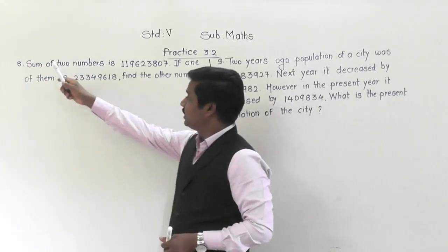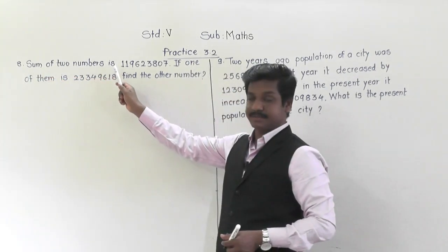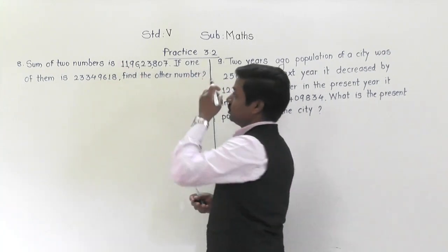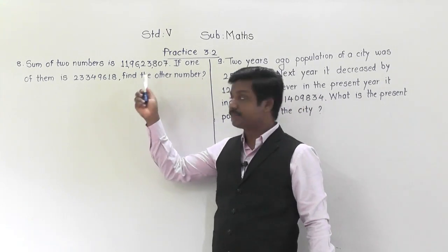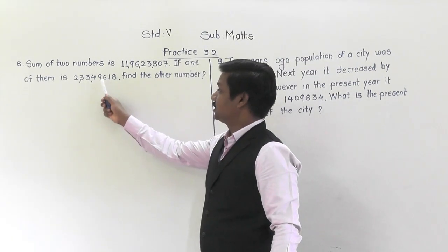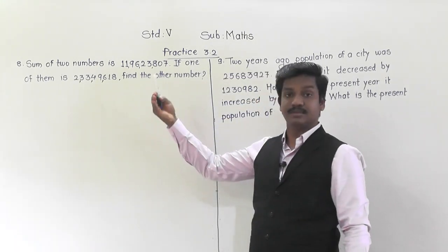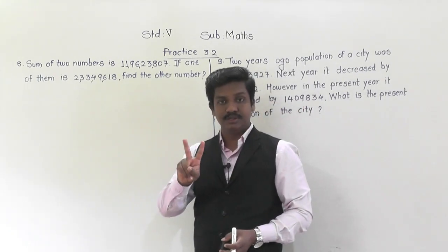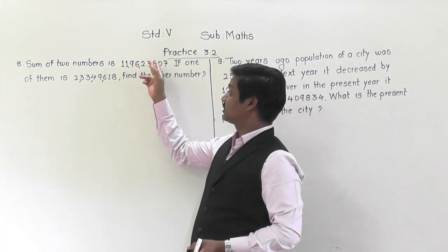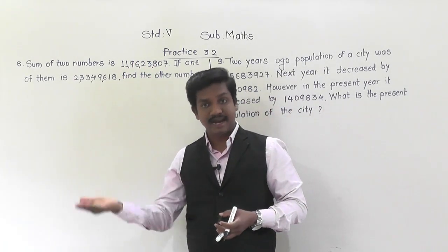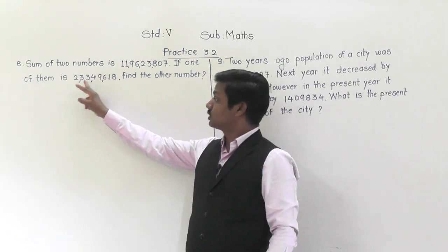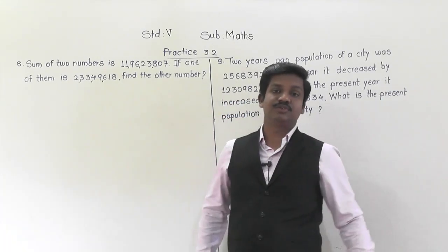Question number eight. The sum of two numbers is eleven crore ninety-six lakh twenty-three thousand eight hundred and seven. If one of them is two crore thirty-three lakh forty-nine thousand six hundred and eighteen, find the other number. There are two numbers; their sum — meaning their addition — is given as 11,96,23,807. One number is given as 2,33,49,618. We have to find the second number.